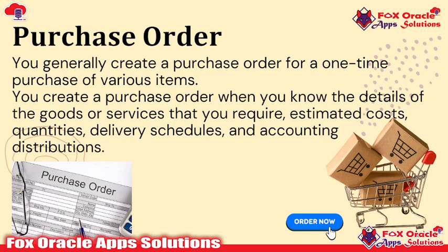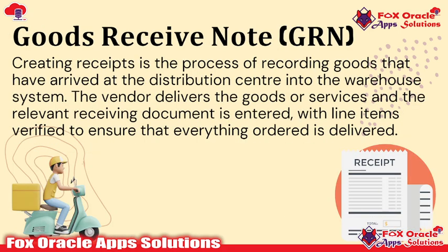We create a purchase order based on the purchase requisition via the RFQ. Once the purchase order items are ready from the supplier and they deliver the same goods to inventory, the document we receive is the GRN. Creating a receipt is the process of recording goods that have arrived at the distribution center into the warehouse system. When we receive items sent by the supplier in the ERP system, we create a receipt document known as the GRN. The vendor delivers the goods or services and the relevant receiving document is entered, with each line item verified to ensure every order is delivered.